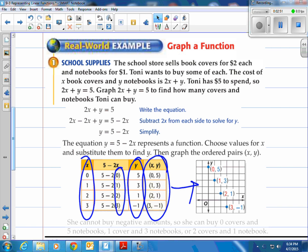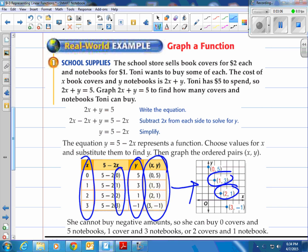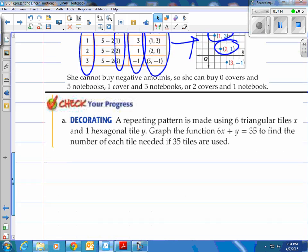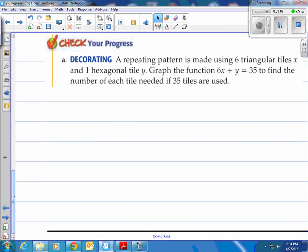Those are the four points that they graphed and basically it says she cannot buy negative amounts so she can buy zero covers and five notebooks, one cover and three notebooks, two covers and one notebook. Those are the only options she has to purchase and those are right here. Since we're talking about notebooks and books. All those add up to five dollars.